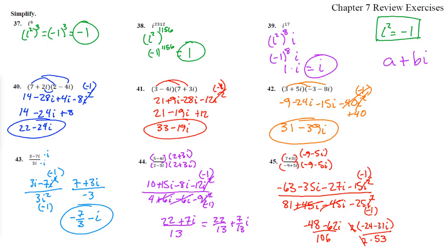We're left with negative 24 minus 31i over 53. And we can write it as negative 24 over 53 minus 31 over 53i. And there we go.